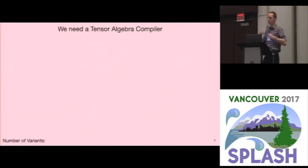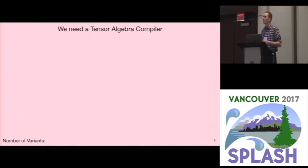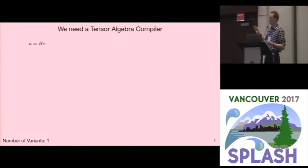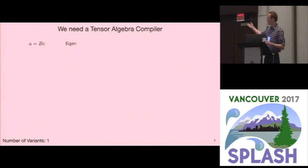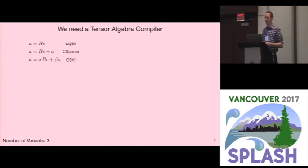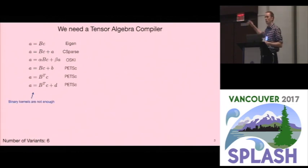I'm going to describe why you need a tensor algebra compiler to do these kinds of things. Consider the alternative, which would be to write a library. This is what we've been doing for dense computations for a long time. Consider writing a tensor algebra library: the first kernel you want to write is a simple matrix-vector multiplication with a sparse matrix. The Eigen library implemented this kernel. The CSparse library implemented this variant, where you accumulate into a result. The OSKI library implemented this variant, and PEFCI implemented three other variants. The reason people implemented all these different variants by hand is that you can get more performance by implementing whole compound kernels rather than just binary expressions.